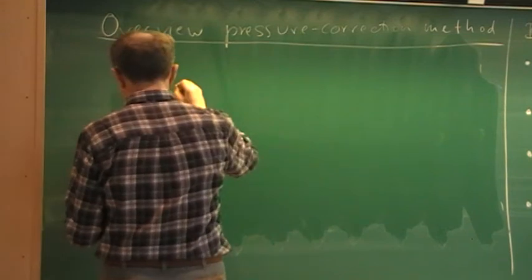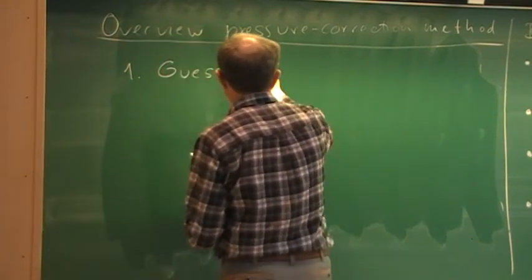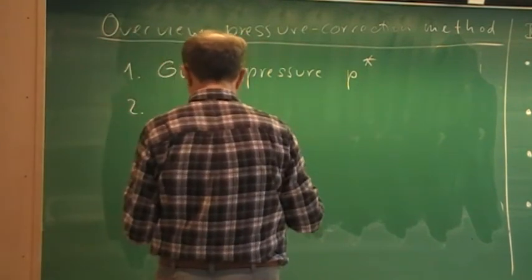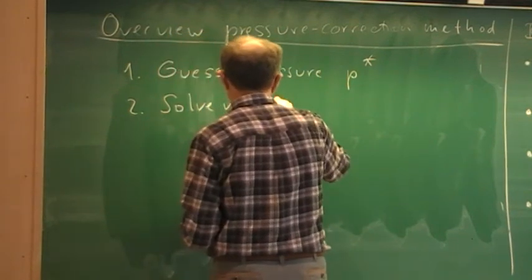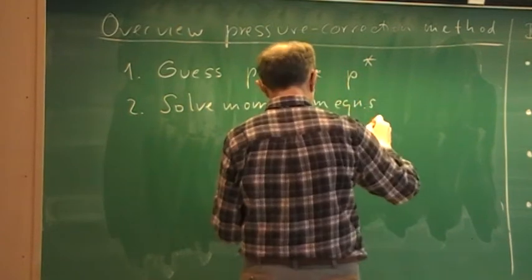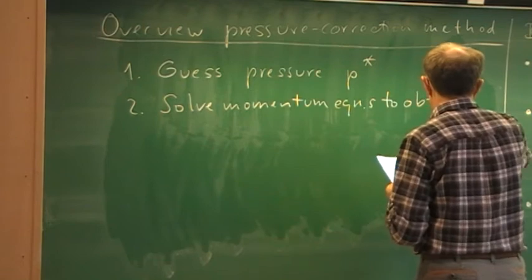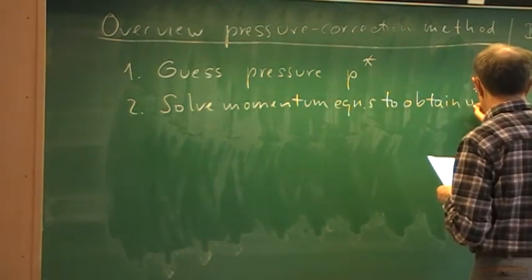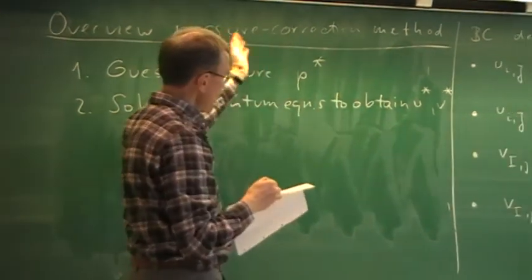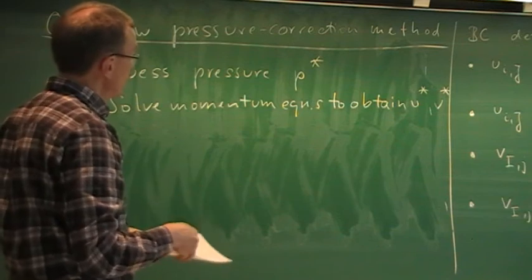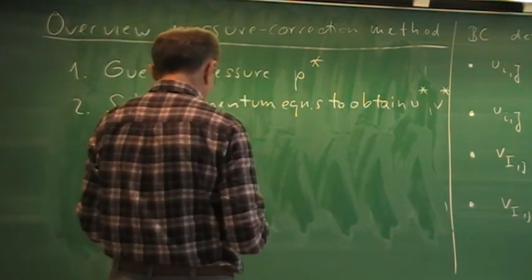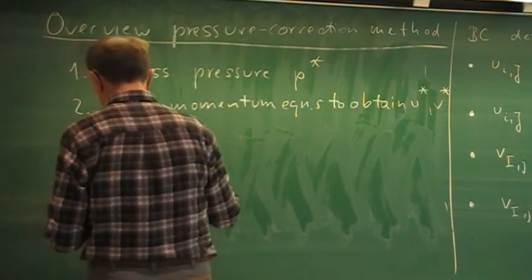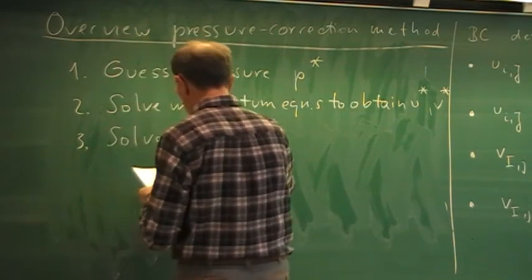That class of methods is called the pressure correction method. It is the method to solve the incompressible Navier-Stokes equations with other equations like the energy equation or species continuity equations and so on. It works like this: first we guess the pressure field — we denote that by P-star.